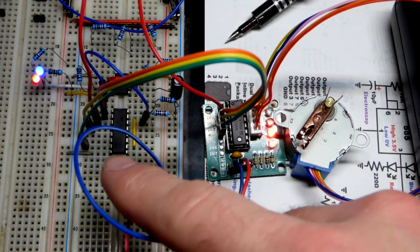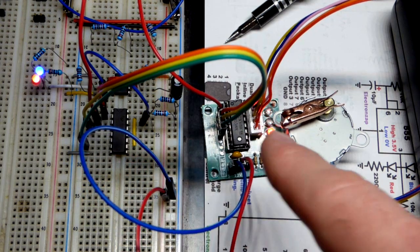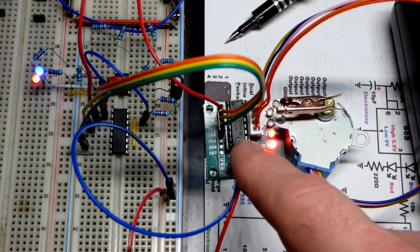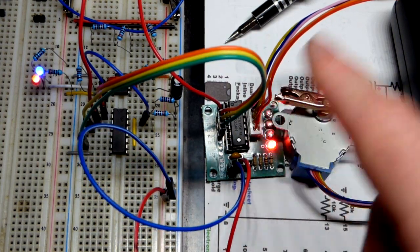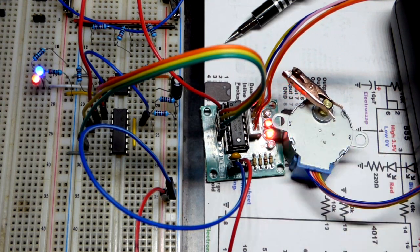In this video we're going to look at how the 4017 with the timing set by the 555 timer can give the pulses to a stepper motor module that will result in the module turning the stepper motor.